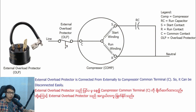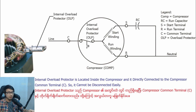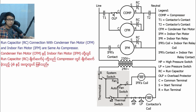The overload protector protects the compressor from overload and overheat. The overload protector is connected to the compressor common terminal. The overload protector is located inside the compressor and is directly connected to the compressor common terminal, so it cannot be disconnected easily. Run capacitor connections with the condenser fan motor and indoor fan motor are the same as for the compressor.